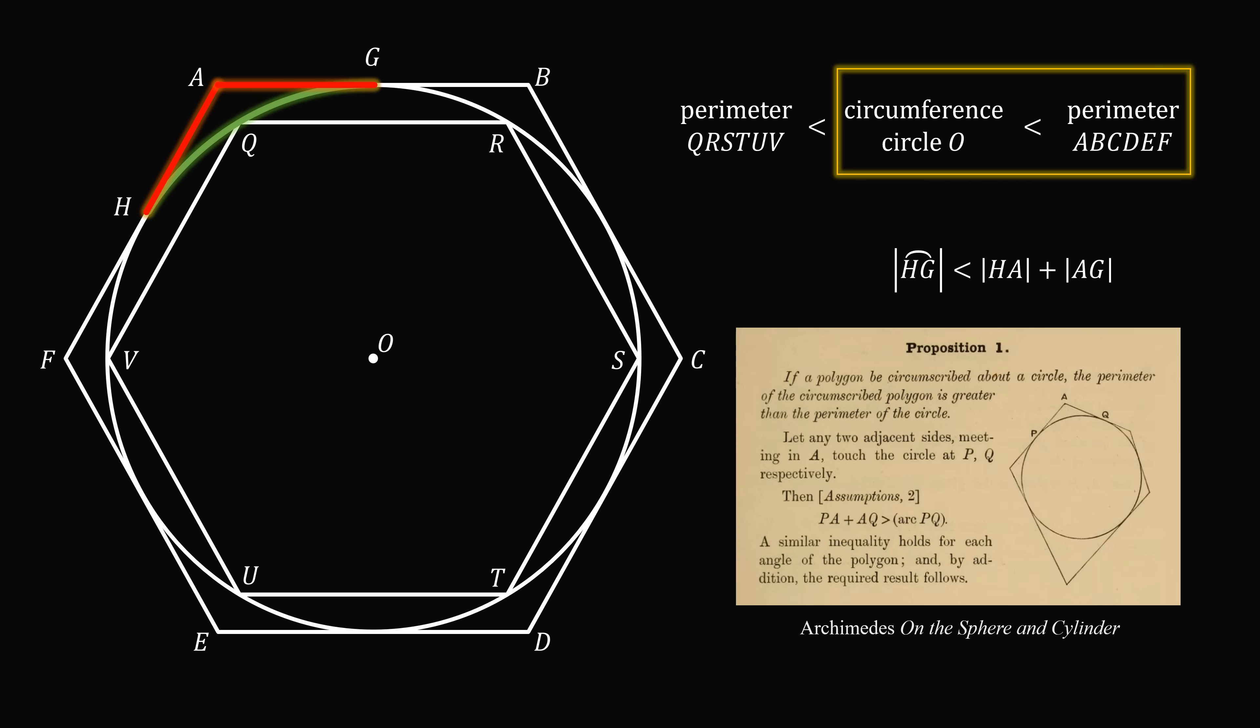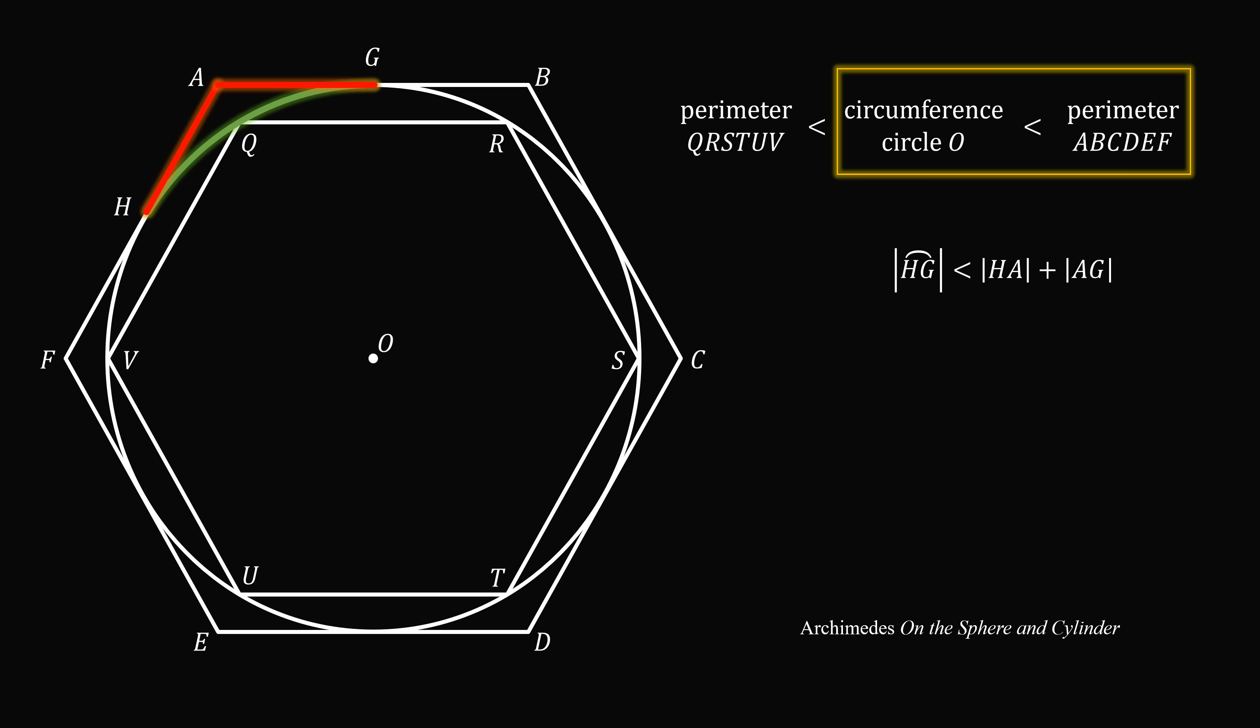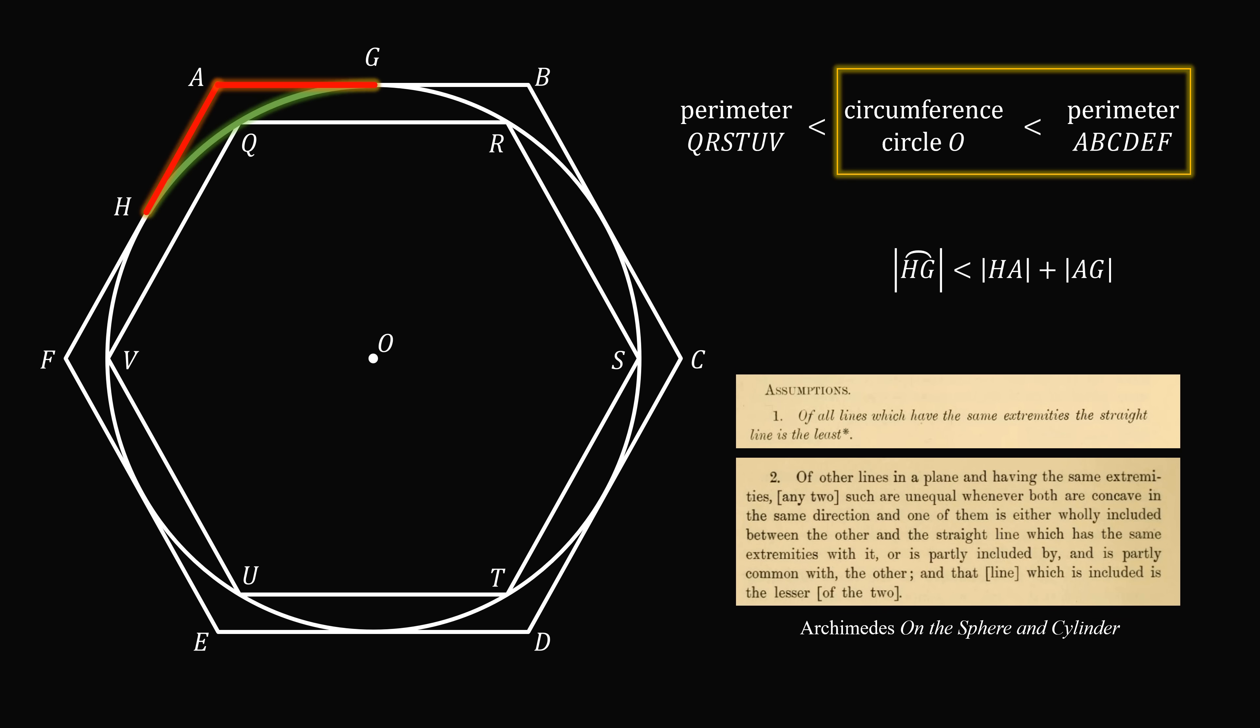Eventually my research led me to the original source, Archimedes on the sphere and the cylinder. Proposition 1: If a polygon be circumscribed about a circle, the perimeter of this circumscribed polygon is greater than the perimeter of the circle. He takes this step that the length of the arc is less than the length of these two straight line segments, but it's justified by assumption number 2. So I went back and said, what is assumption number 2? Assumption number 1 is saying that a straight line is the shortest path between two points, and assumption number 2 is essentially assuming what we want to prove. So it did lead me to a sort of unsatisfying conclusion that not everything was completely justified as I've been taught. But still it was something that was important historically. If you can justify this step, please let us know. I'd be very curious if there's a simple explanation.